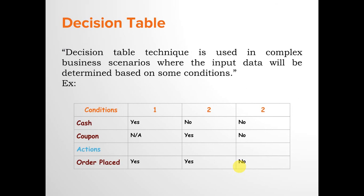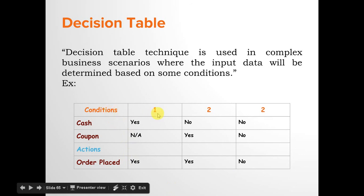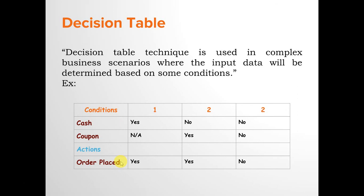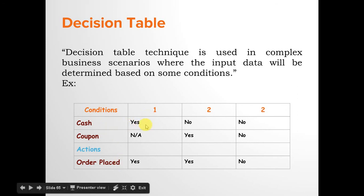Decision table technique is used in complex business scenarios where the output is determined based on conditions. If you have worked in any programming language, you must have implemented conditional logic like if-else statements — based on some decision, some action is taken. Let's understand this with an example. In the conditions, we have conditions 1, 2, and 3 based on cash and coupon availability, and based on that you will be able to place an order successfully.